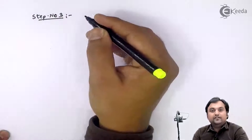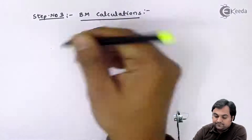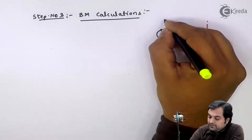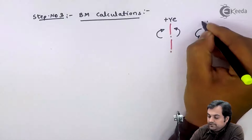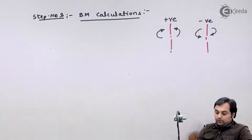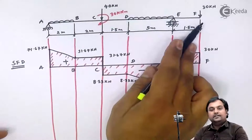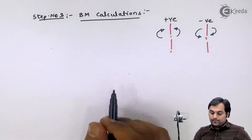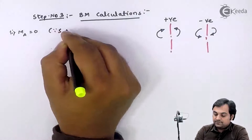Tip number 3 — this is the continuation of the problem. Here we have bending moment calculations. I will first draw the sign convention: clockwise moment to the left and anti-clockwise moment to the right is positive; anti-clockwise to the left and clockwise to the right is negative. Since the beam is supported at A and free at F, the bending moment at the support A is equal to 0, as it is simply supported.